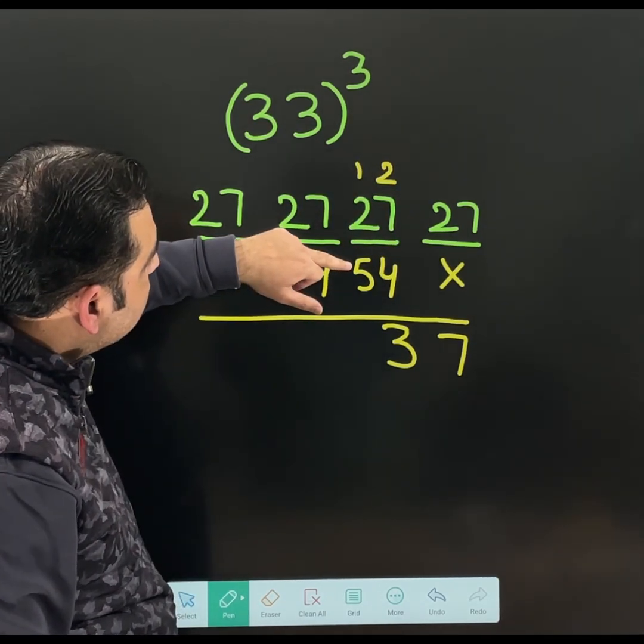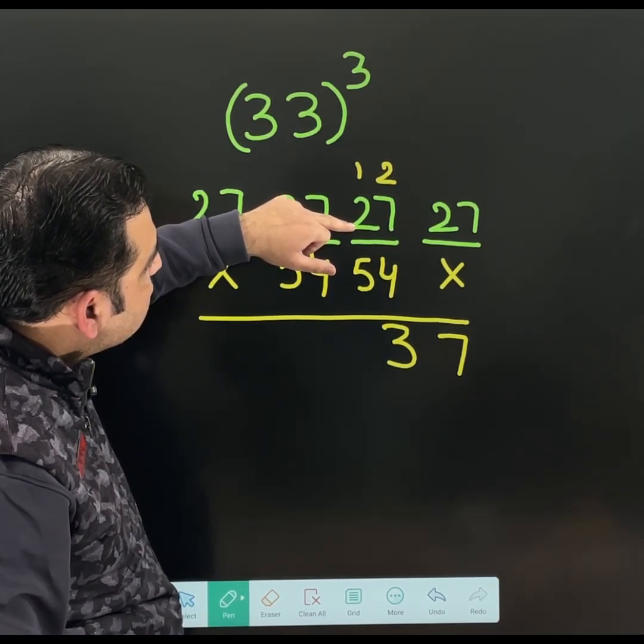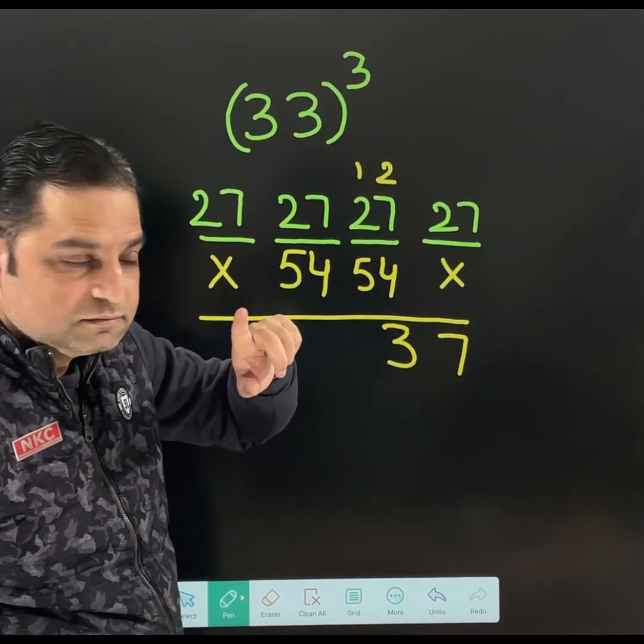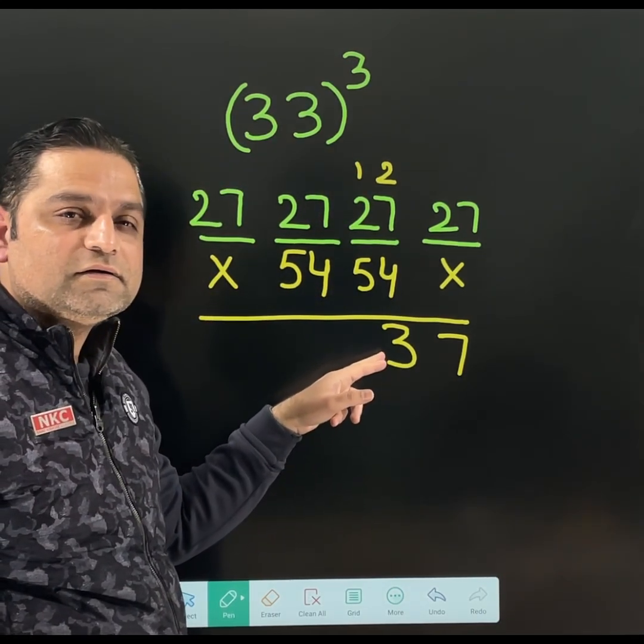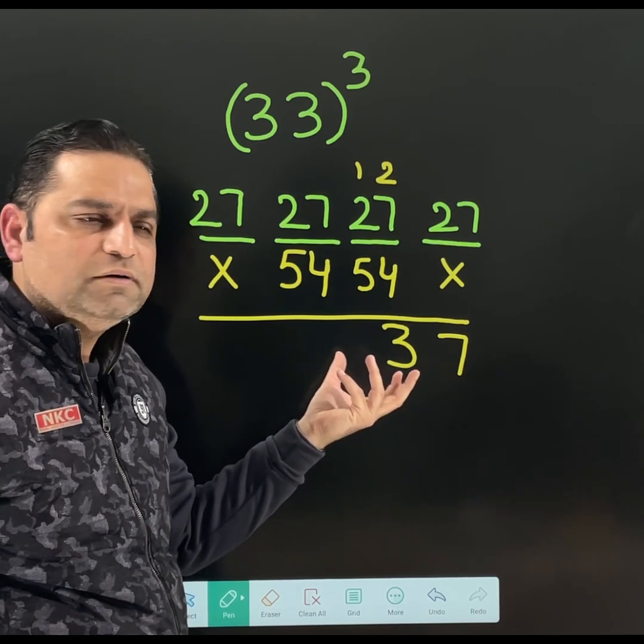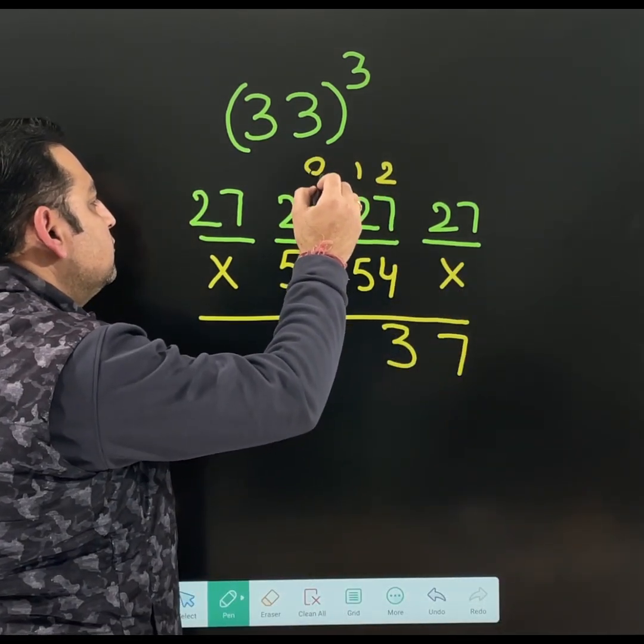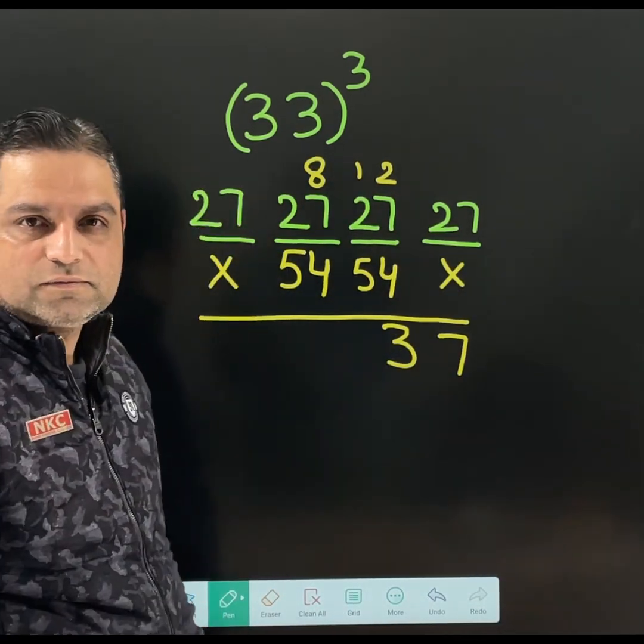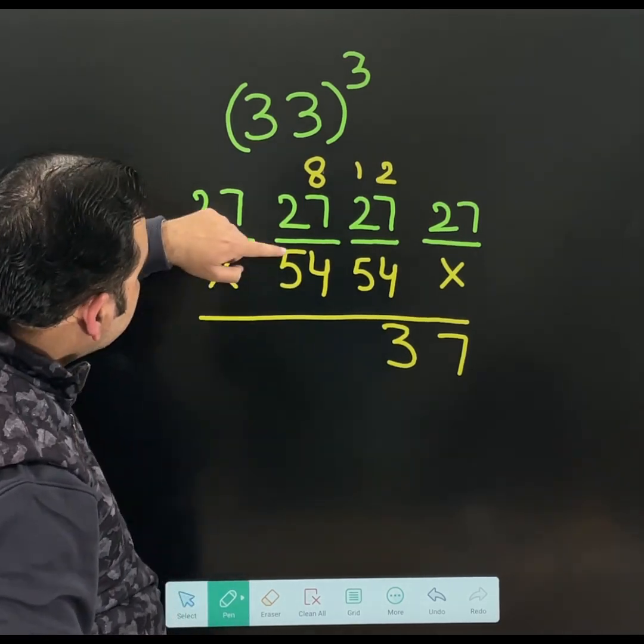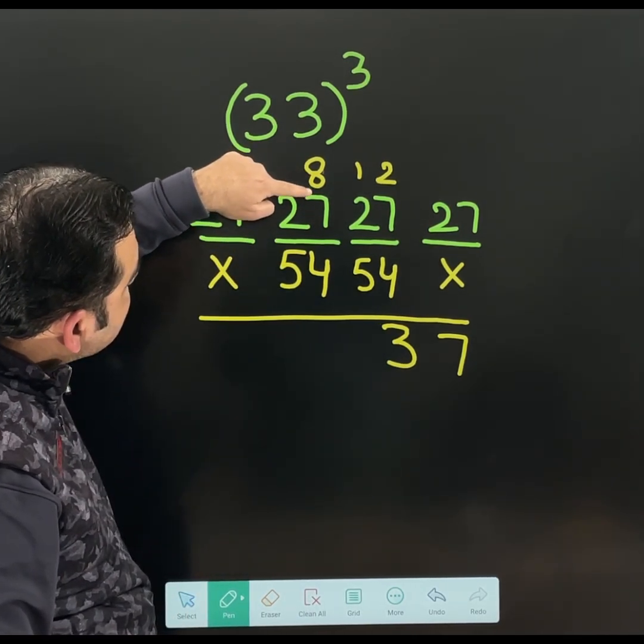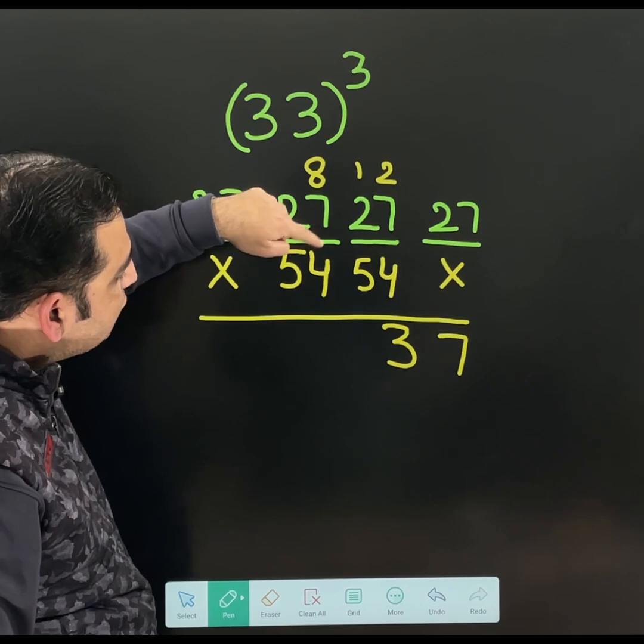Add them. 5 plus 2, 7. 7 plus 1, 8. But I will not write 8 here. Otherwise, it will become a 2 digit number. 8 will be carried to the next value. Try adding them again. 8 plus 7, 15. 15 plus 4, 19. So write 9 here. 1 will be carried.